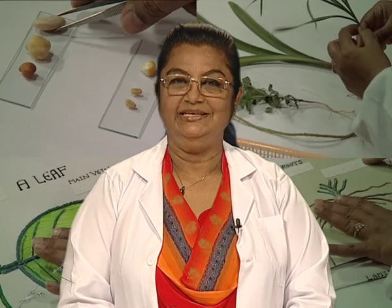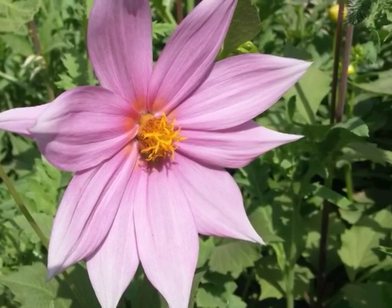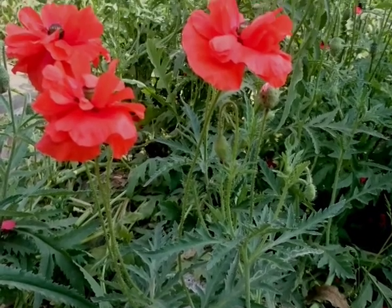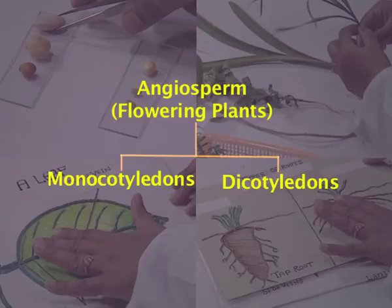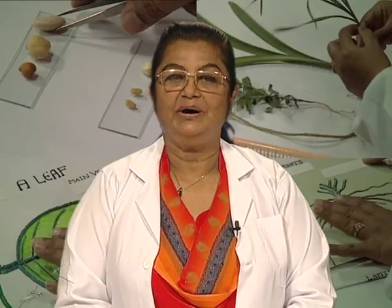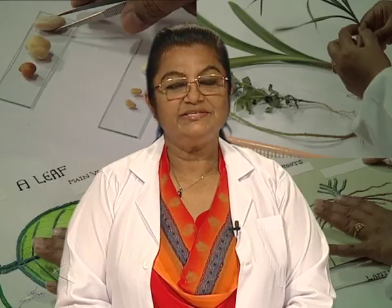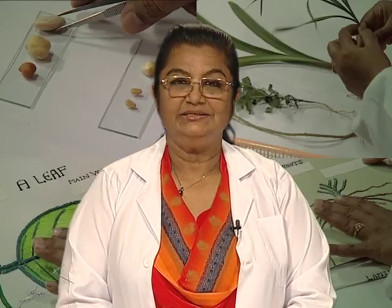You have already learned that all flowering plants are called angiosperms. Angiosperms are further divided into monocotyledonous plants and dicotyledonous plants. We hear the word cotyledons, which is common. But what is a cotyledon? Cotyledon is a part of the seed. And what is the function of cotyledon? Cotyledon provides nutrition to the embryo, which is present in the seed during the time of germination.